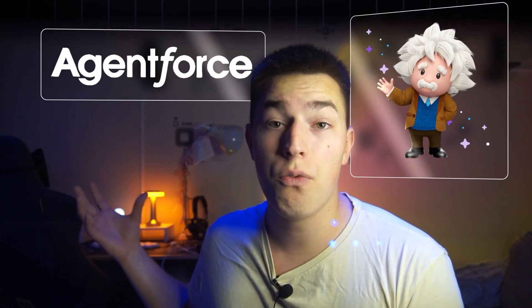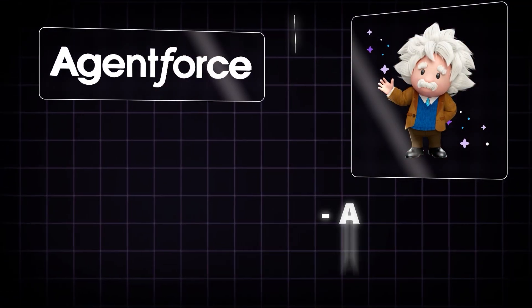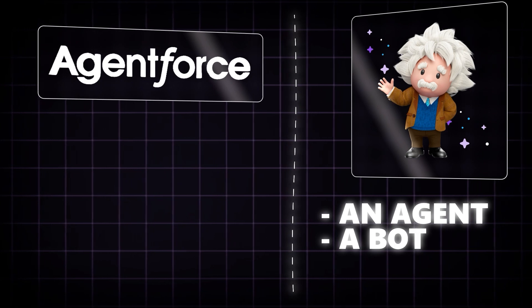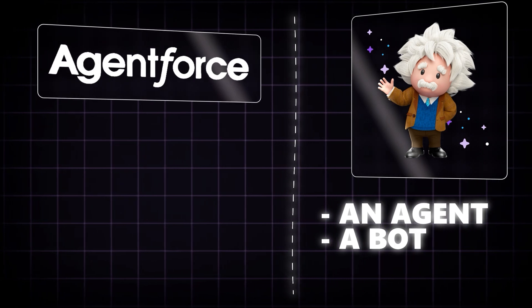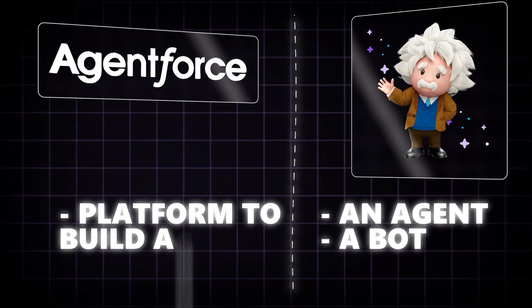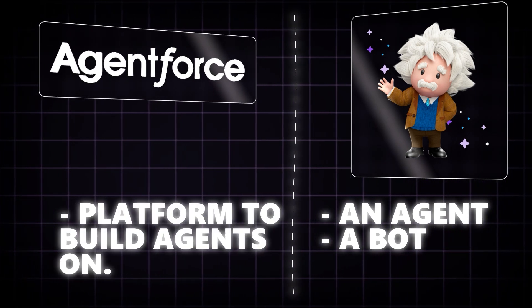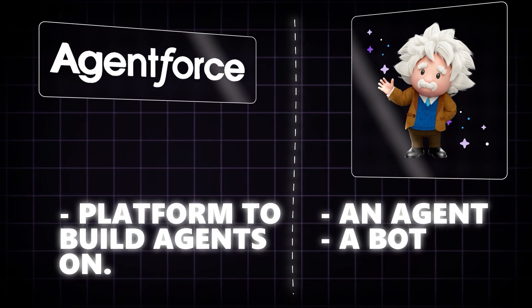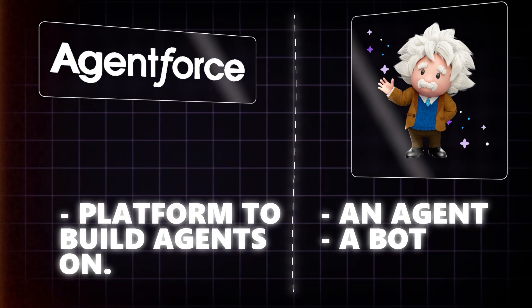The difference between Einstein and AgentForce is that Einstein is an agent — a bot — whereas AgentForce is a platform to build those agents on.